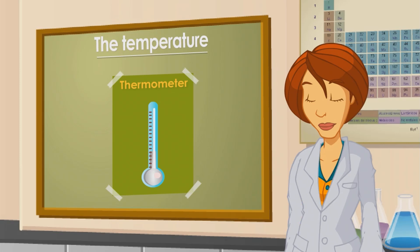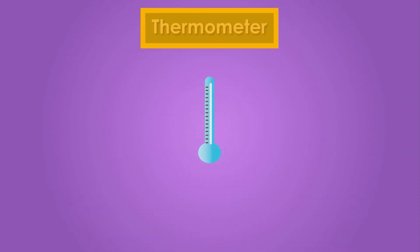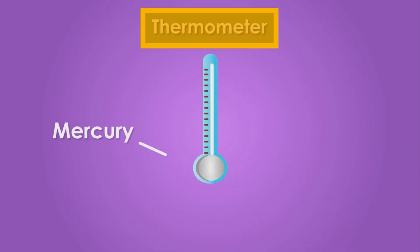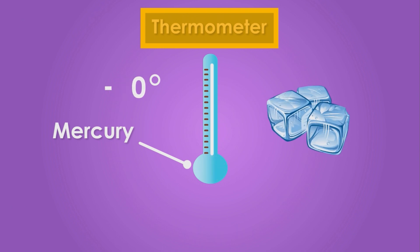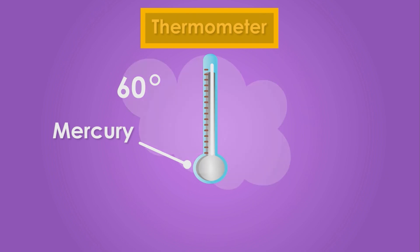We've just made a homemade thermometer with this experiment. Common thermometers are calibrated devices which contain mercury inside. And as it's a metal, it's a very good heat conductor. When this metal is in contact with a cold body, it contracts, and it expands in contact with a body at a higher temperature. So, by expanding or contracting, the mercury points out the room temperature.